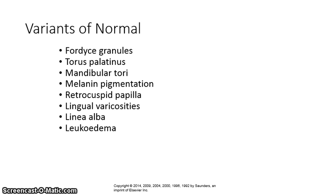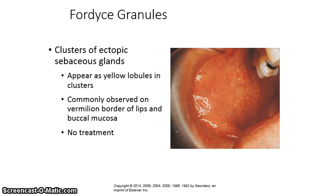We will review the ones we have already gone over very briefly and go into more detail on the new variants of normal. Fordyce granules are clusters of ectopic sebaceous glands. Ectopic means they are not in the location that they are expected to be found — they are usually found around hair follicles.